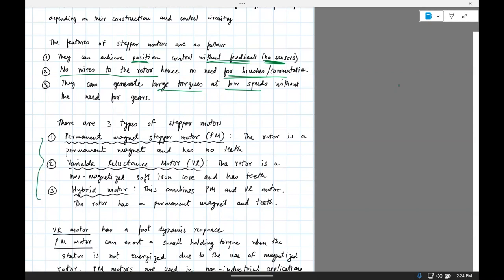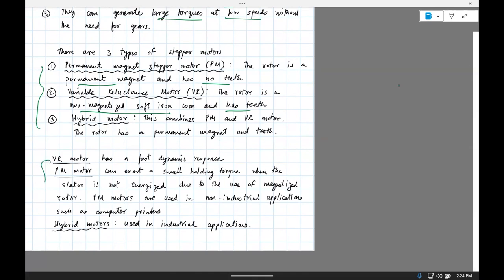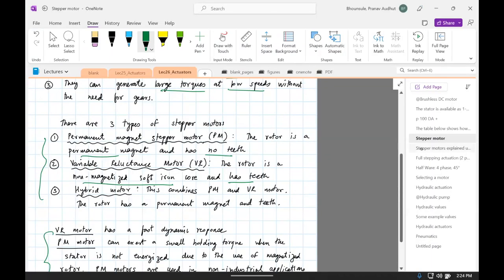Now, there are three types. There is a permanent magnet stepper motor, a variable reluctance motor, and then the hybrid. So in a permanent magnet motor, the rotor has permanent magnet, no teeth. Reluctance motor, non-magnetized soft core. So it uses windings instead of a magnet. And then if you take the two together, you will have a hybrid motor. And then depending on the characteristics, you can choose one of them.